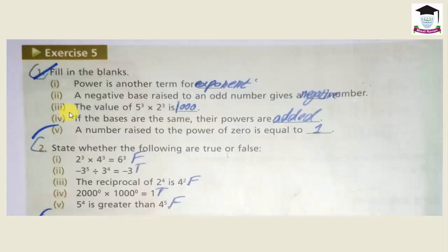Third fill in the blank: the value of 5 power 3 multiplied by 2 power 3 is ___. When we simplify it, 5 multiplied by itself 3 times gives 125, and 2 multiplied by itself 3 times gives 8. Multiplying these together, the answer is 1000.